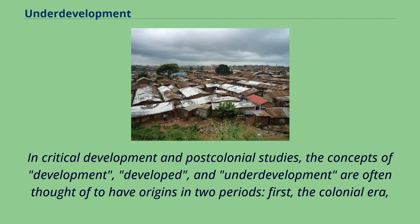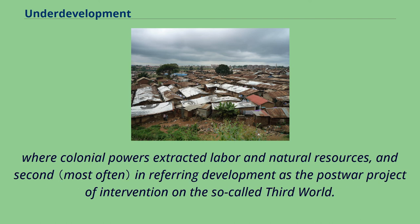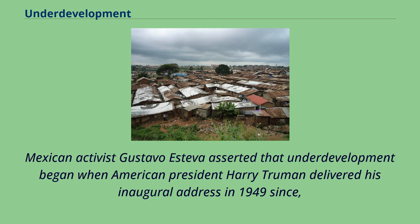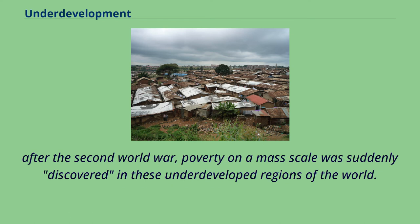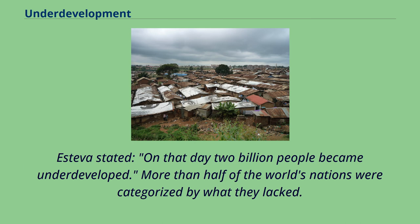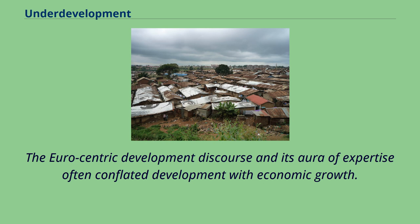First, the colonial era, where colonial powers extracted labor and natural resources; and second, in referring to development as the post-war project of intervention on the so-called Third World. Mexican activist Gustavo Esteva asserted that underdevelopment began when American President Harry Truman delivered his inaugural address in 1949, since after the Second World War, poverty on a mass scale was suddenly discovered in these underdeveloped regions. Esteva stated that on that day, two billion people became underdeveloped — more than half of the world's nations were categorized by what they lacked.